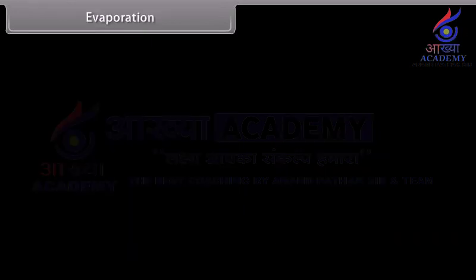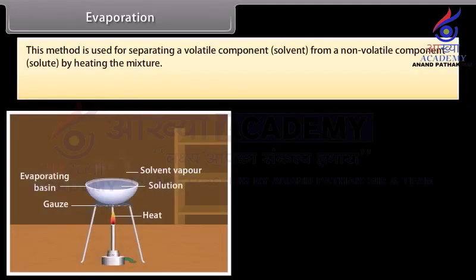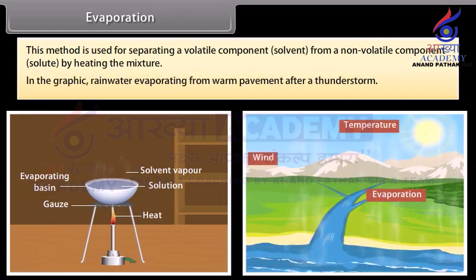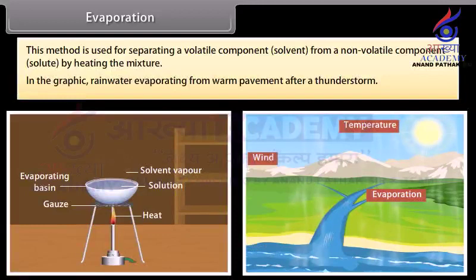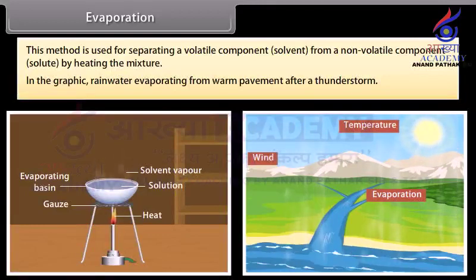Evaporation. This method is used for separating a volatile component (solvent) from a non-volatile component (solute) by heating the mixture. An example is rainwater evaporating from warm pavement after a thunderstorm.